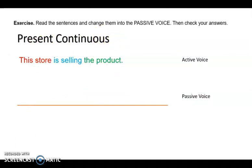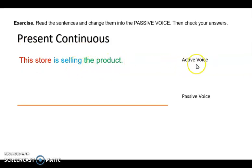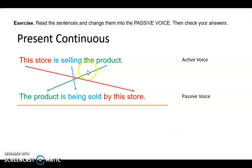Then we have another example — this is the present continuous tense. Read the sentences and change them into the passive voice, then check your answers. Leemos la oración, tomamos unos segundos, ponemos pausa al video y checamos nuestras respuestas. Active voice: 'This store is selling the product' — esta tienda está vendiendo el producto. The answer is: 'The product is being sold by this store.'